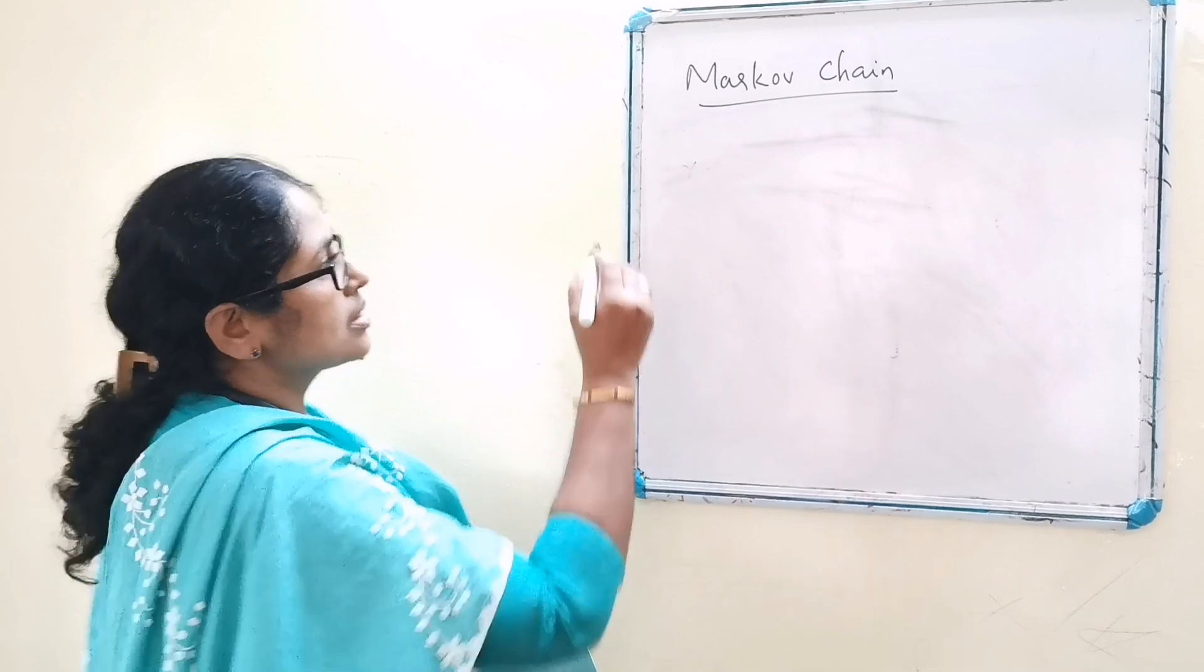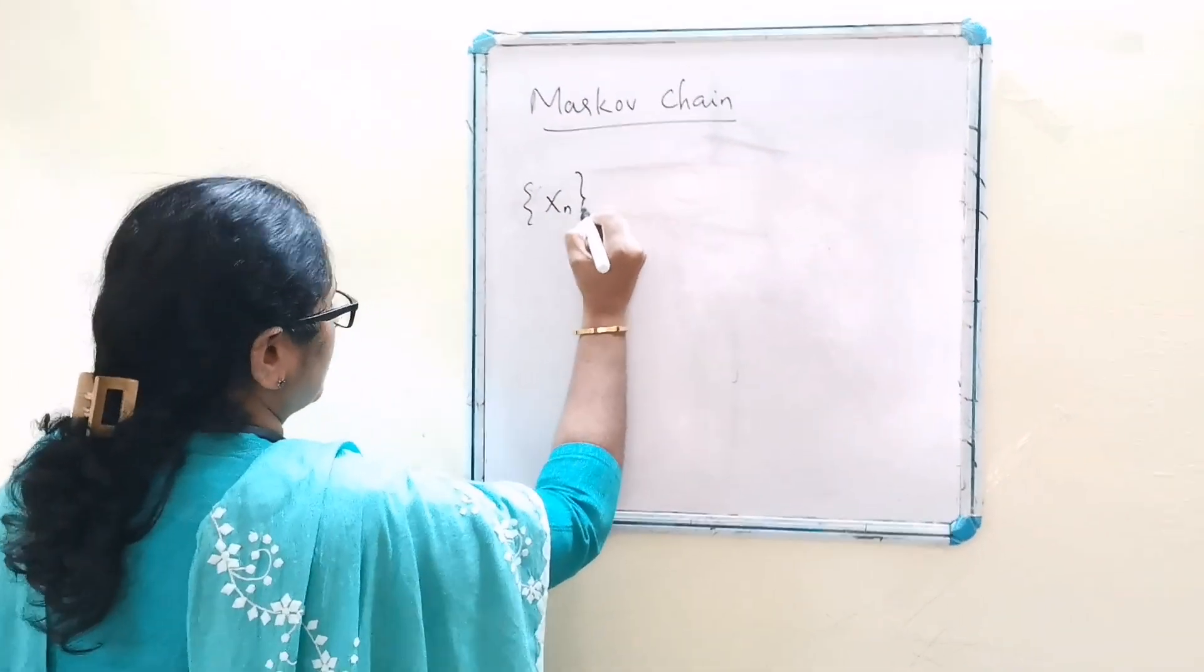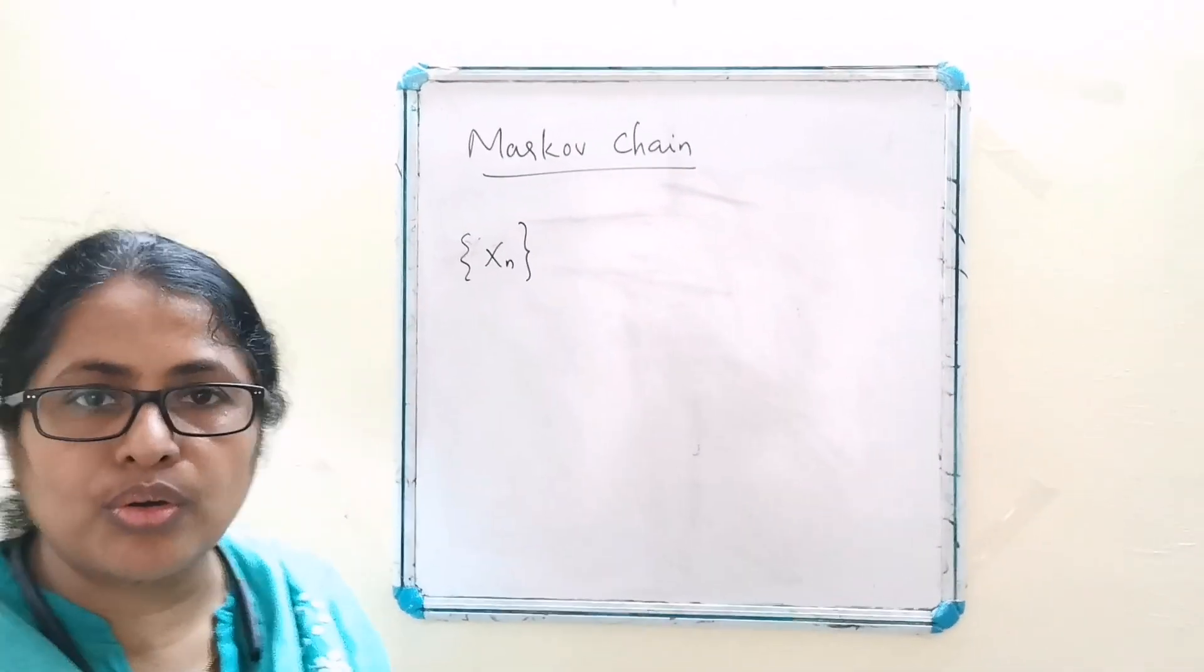A stochastic process sequence xn is called a Markov chain if: